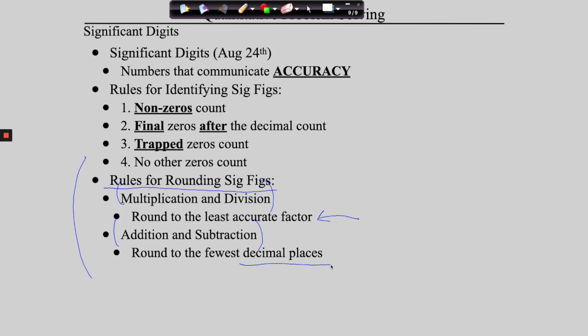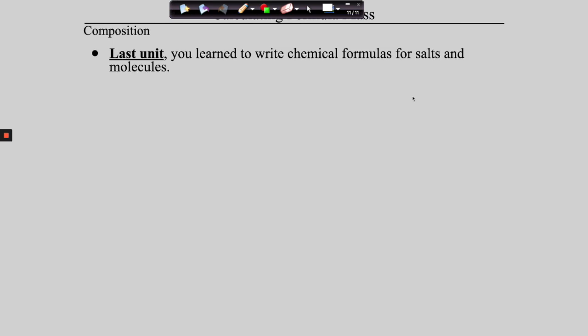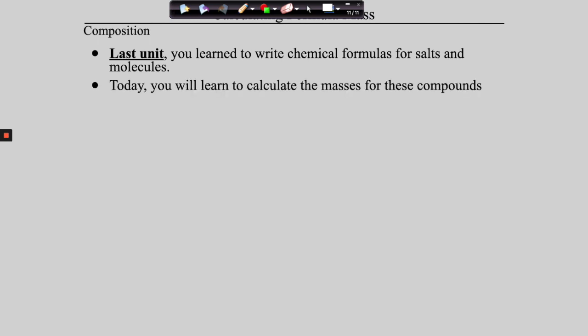With that said, we are now ready to move into the new skill. In the last unit, we learned to write chemical formulas for salts and for molecules. Today, what we're going to do is figure out the masses of these salts and molecules. But in order to do that, the first thing we need to do is learn to break compounds down into their elements.